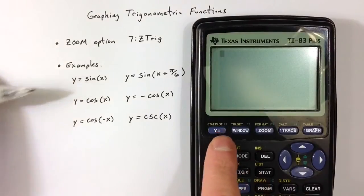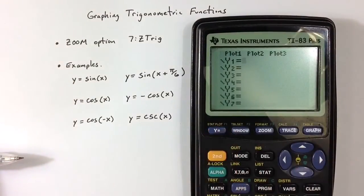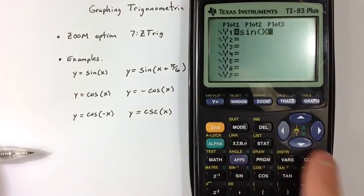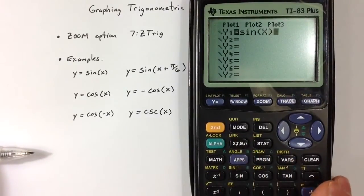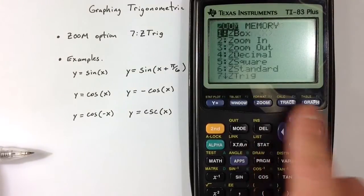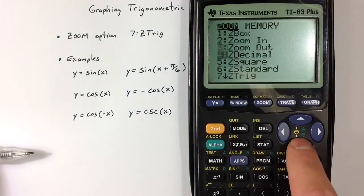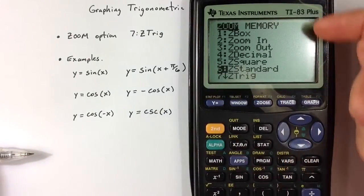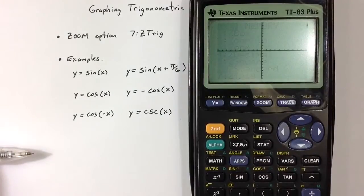If I go to the y equals menu and enter sine of x, close the parenthesis, and then often we graph things in standard position. That's zoom option 6. It sets up the window in the standard negative 10 to 10 for x, negative 10 to 10 for y, and that works okay for sine.